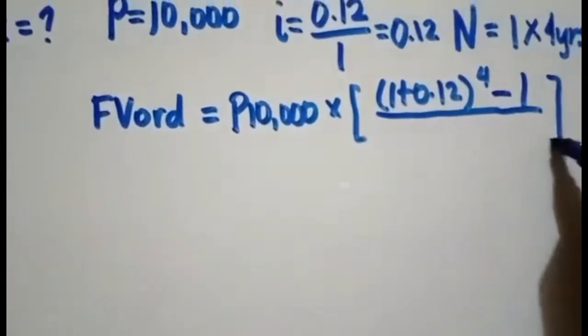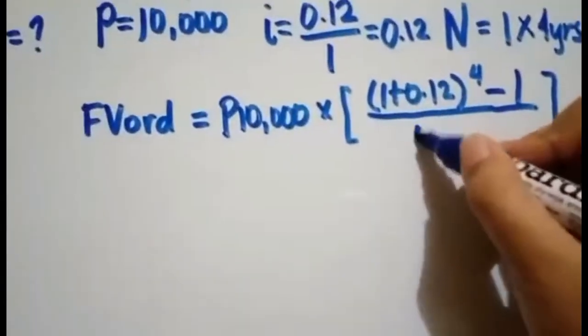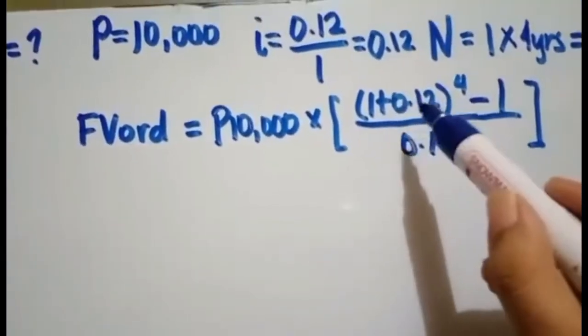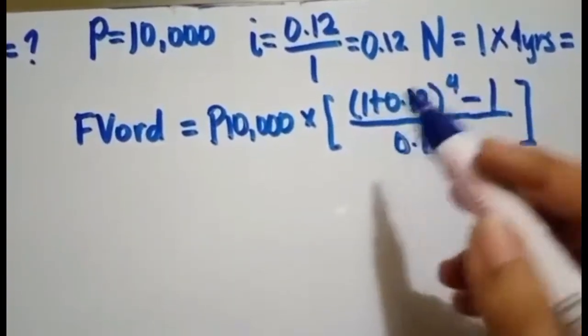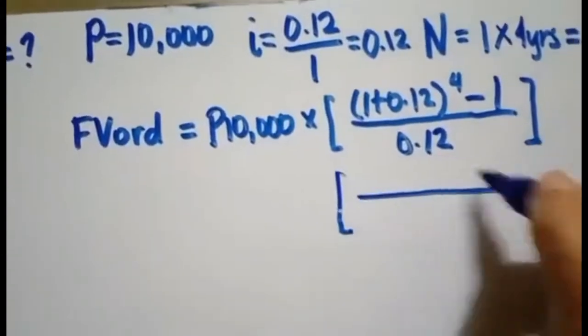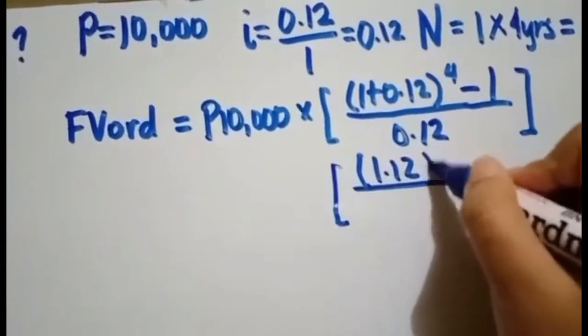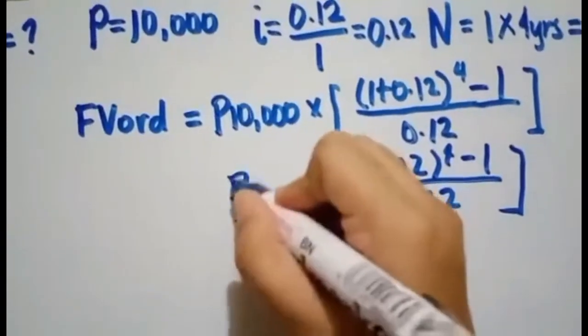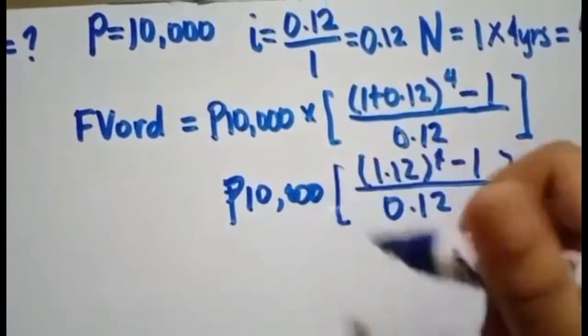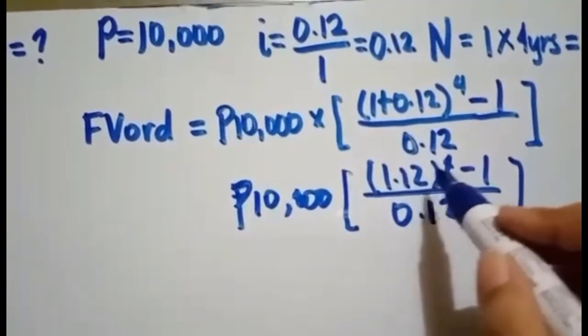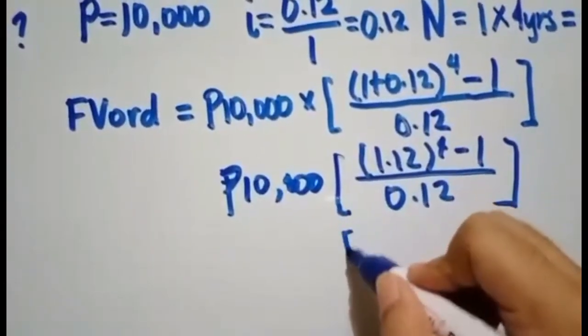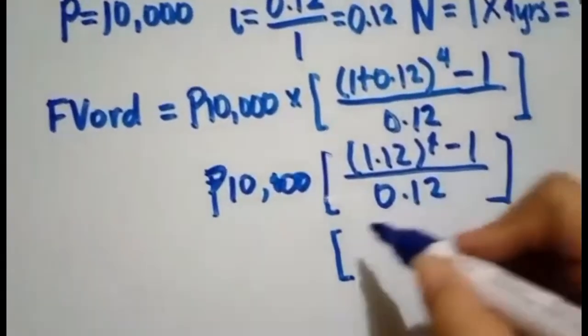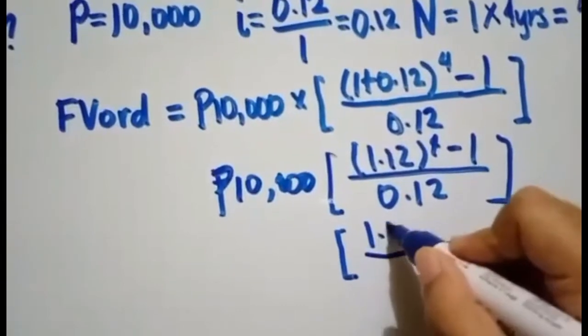You have 1 plus 0.12 to the raise of 4, or 1.12 to the raise of 4. You have 1.12 to the 4 minus 1 by 0.12. You have here your annuity payment. Then, you have to solve this using your calculator. 1.12 to the raise of 4 is equivalent to 1.5735.